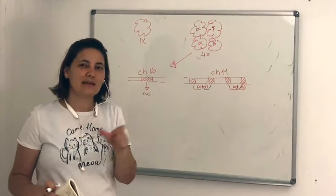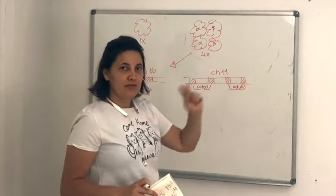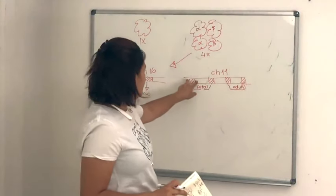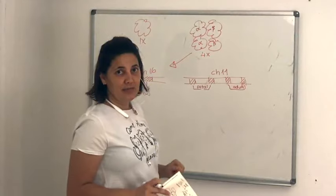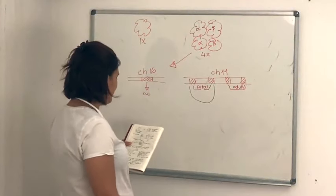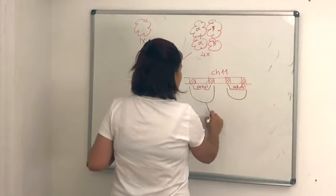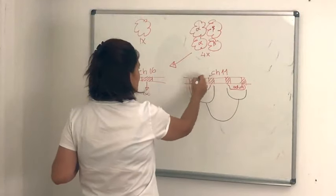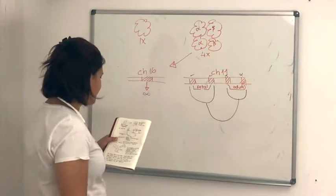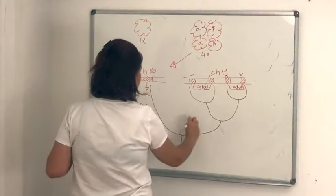Şimdi bunların birbirinden ne zaman ayrıştığını hesaplayabiliyorlar. Çünkü hepsi aslında en başta tek bir tane gendeydi. O gende ne kadar mutasyon var, ne kadar değişim var, ona bakarak hesaplayabiliyorsunuz. Türleri birbirine kıyaslarken ağaç çizdiğimiz gibi, gen bölgeleri için de ağaç çizebiliyoruz. Şu ikisi birbirine en yakın, bunlar fetal kodlayanlar. Burası alfa, burası beta'ya gidiyordu.